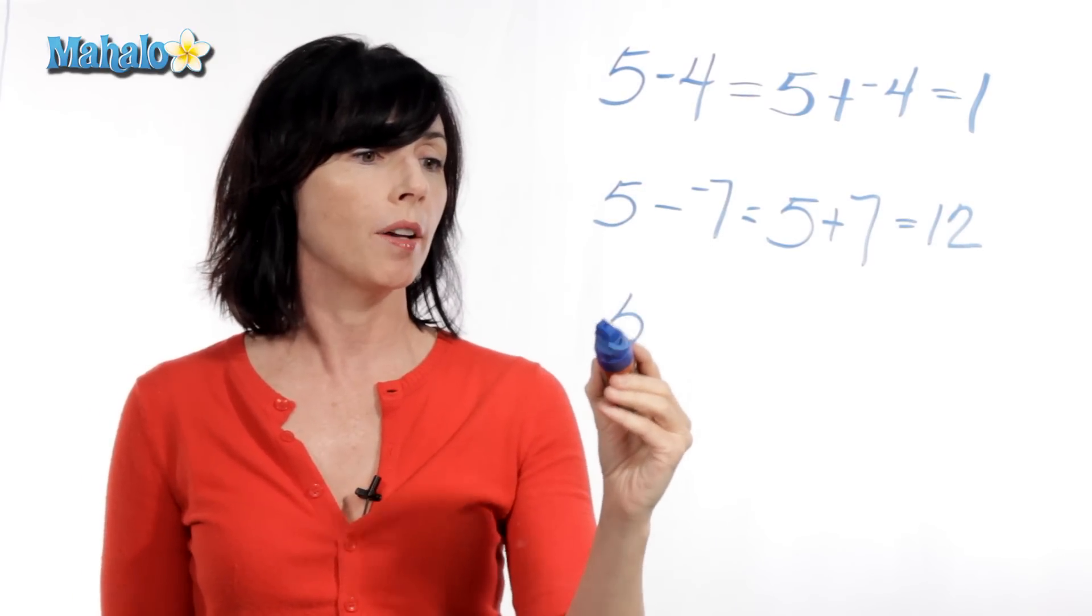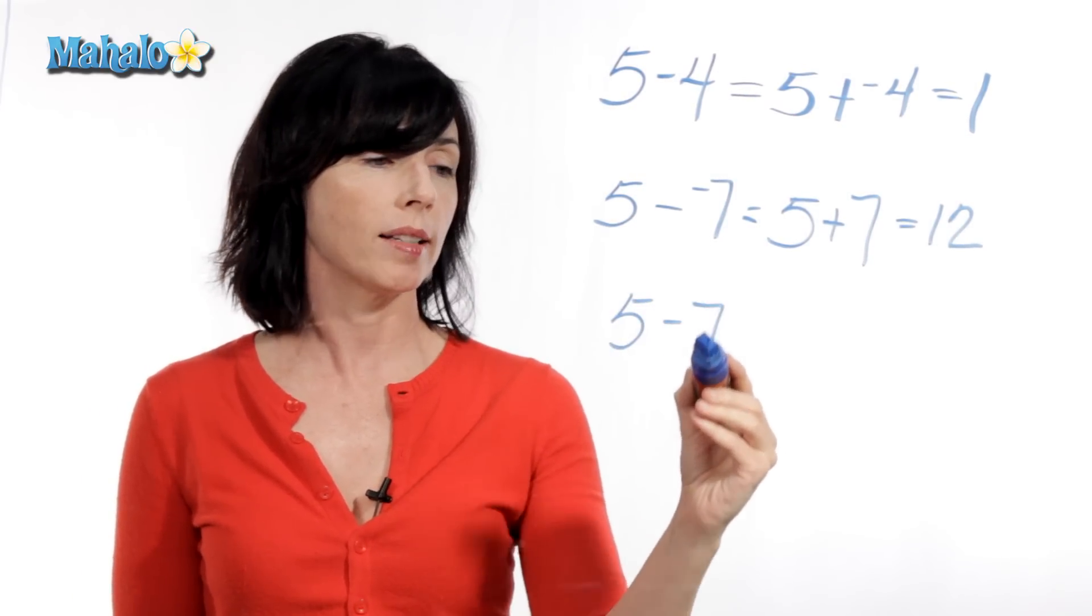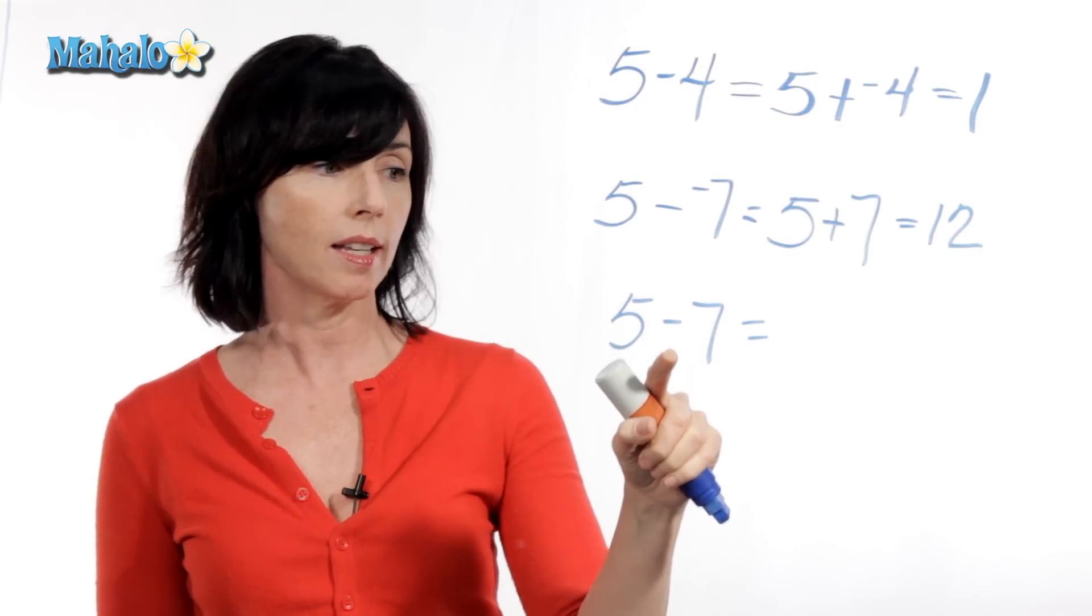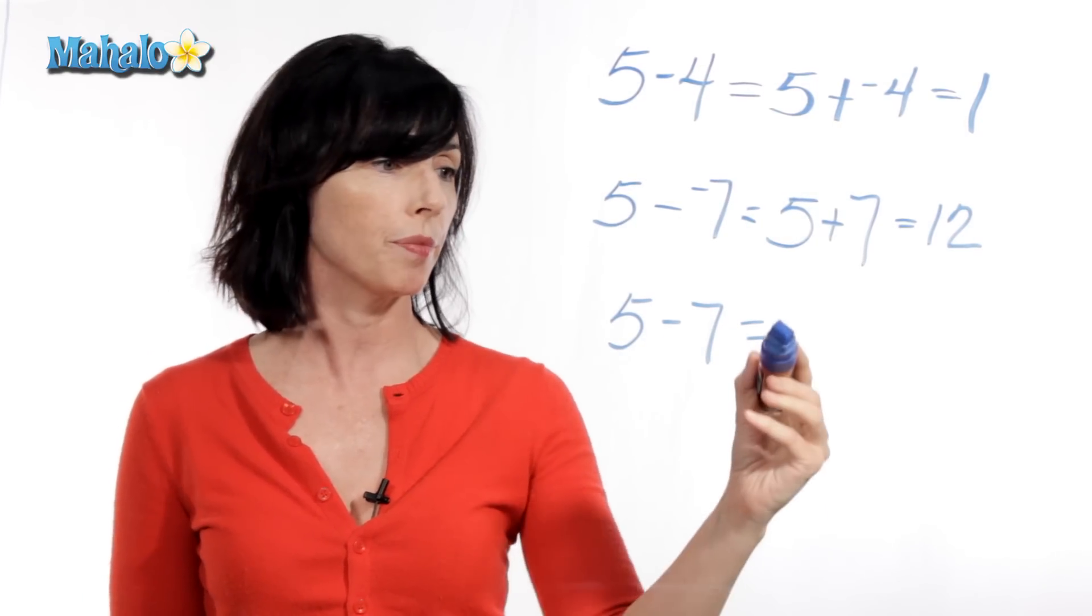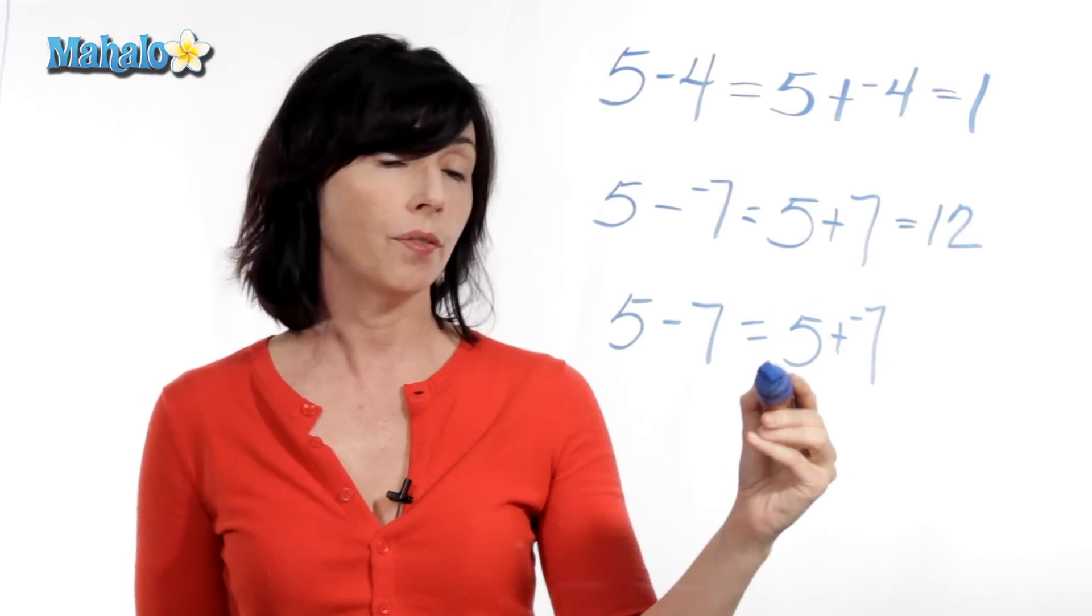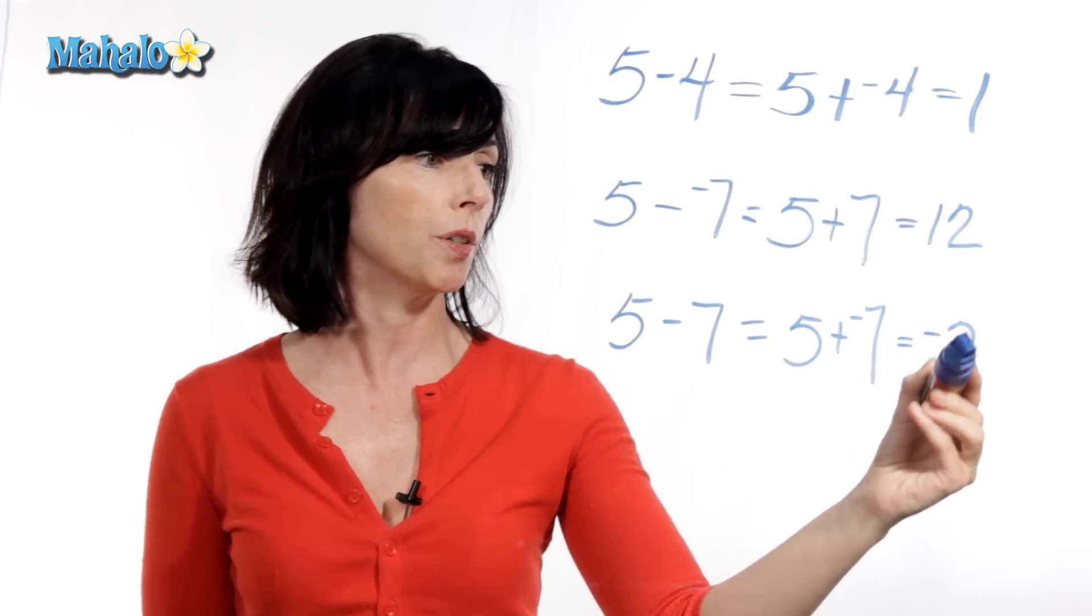What if we have 5 minus a positive 7? Okay, so we'll change this sign to plus and we'll change the sign of this number. So, this becomes 5 plus negative 7. And 5 plus negative 7 is equal to negative 2.